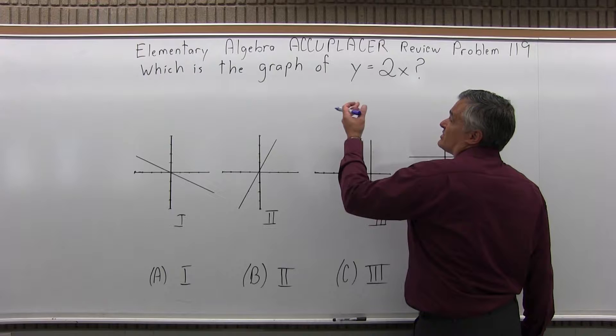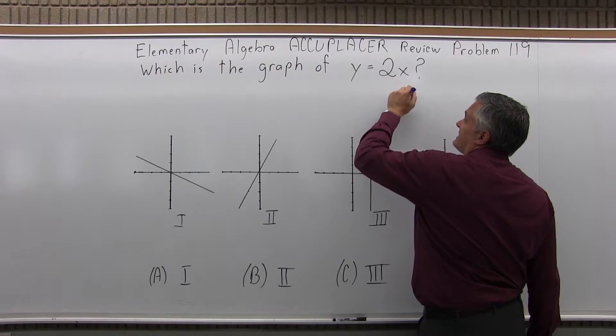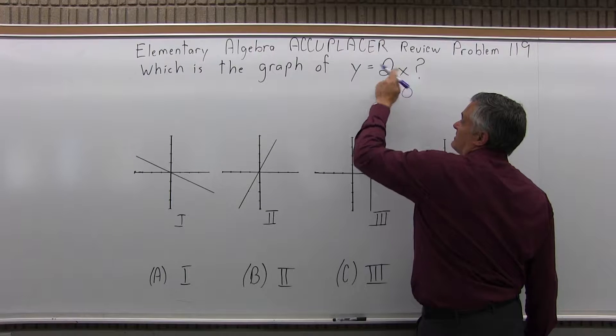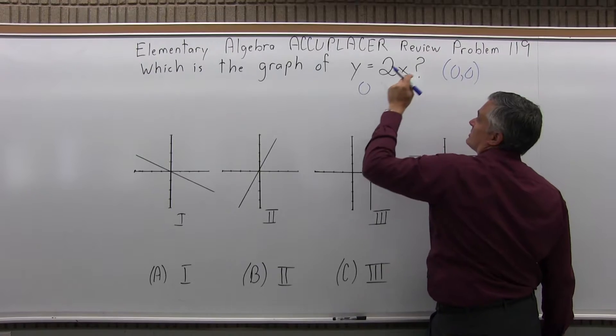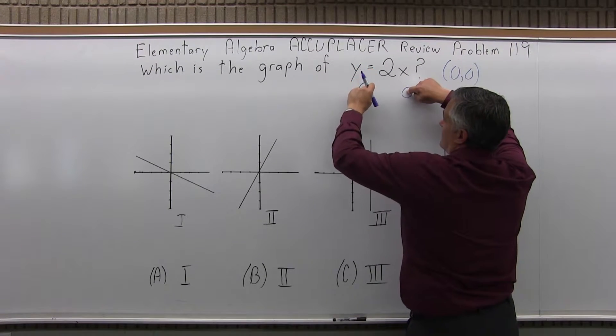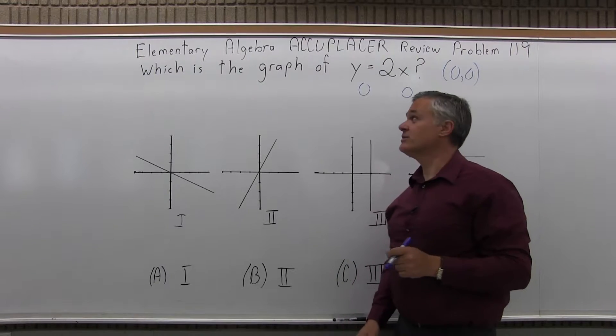So what we can do is just pick values of x and y that work. So let's say x is 0. So 2 times 0, y would be 0. So one point that works is 0, 0, 0 for x, 0 for y. If I put in a 0 for x, 0 for y, the equation is 0 equals 0, and that's certainly true.